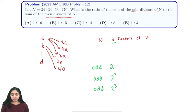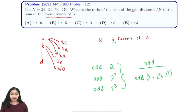And our sum of even divisors is just going to be the sum of these three expressions. And the sum of our odd divisors, let it just be some variable odd. So odd divisors over the sum of our even divisors is odd over odd times 2 plus 2 squared plus 2 cubed. And now you'll note that this is really nice because we can just cancel. And this is 1 over 2 plus 4 plus 8, which is 1 over 14.